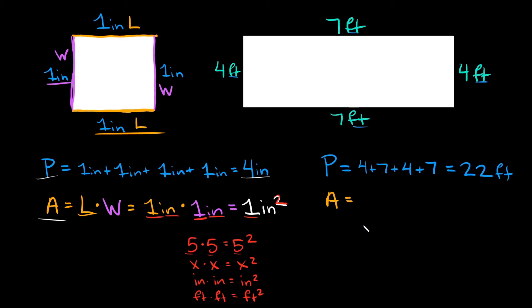Well again the formula for area for a square or a rectangle is length times width. So we can say that the length is this horizontal side and then we can say that the width is this vertical side. So the length we can say is seven feet. And then we're multiplying that by the width which is four feet.